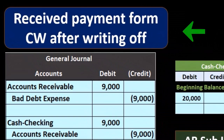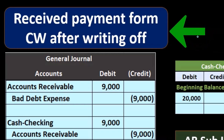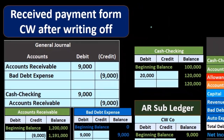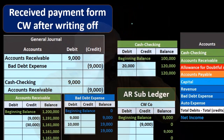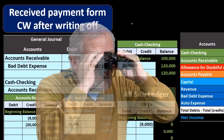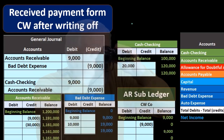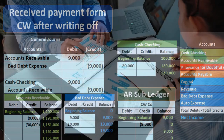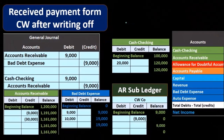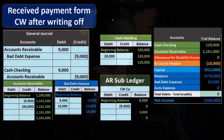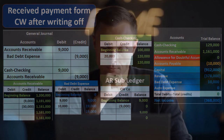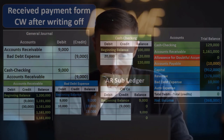Next, we're going to say we receive payment from CW after writing it off. This is that unusual one — it doesn't happen all that often in real life. We're going to first take a look at the direct write-off method. This is a really good example problem because it allows us to see the difference between the two methods and what would happen if we had to reverse a write-off, which makes us think kind of backwards — great for testing our knowledge on this type of stuff.